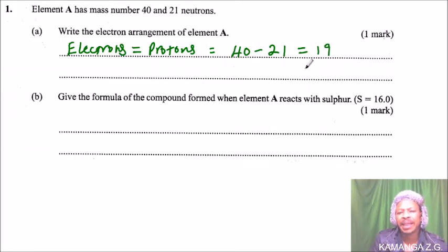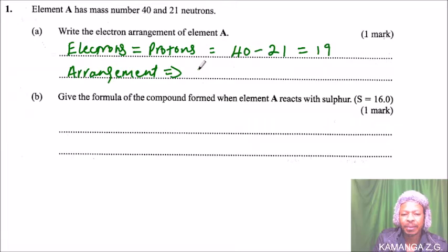Once you get number 19, what is the electronic arrangement of A? The arrangement is how you are required to express how the electrons are arranged in the atom. Normally what we say is that we start with 2. The first orbital level has 2 electrons.